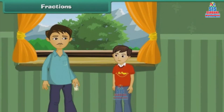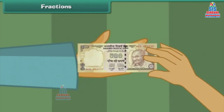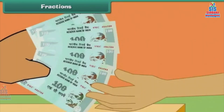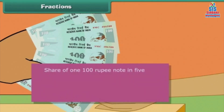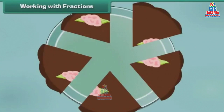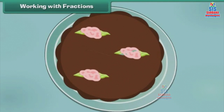Consider another example. Rishabh's father sends him to a nearby shop to get a five hundred rupee note exchanged for hundred rupee notes. The shopkeeper accepts the five hundred rupee note and gives five hundred rupee notes in return. Each hundred rupee note is one out of five. Therefore, hundred rupees constitutes one by fifth of five hundred rupees.